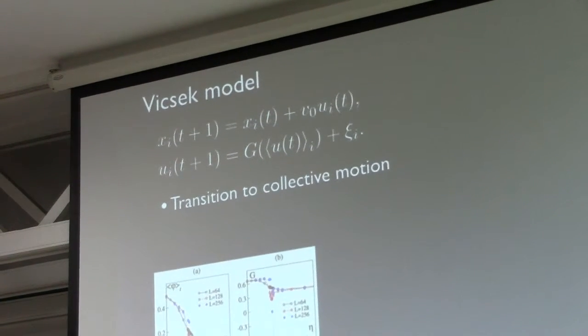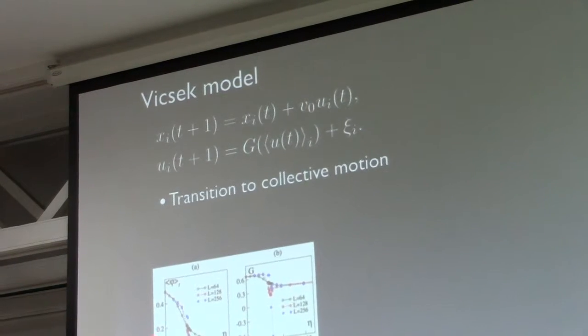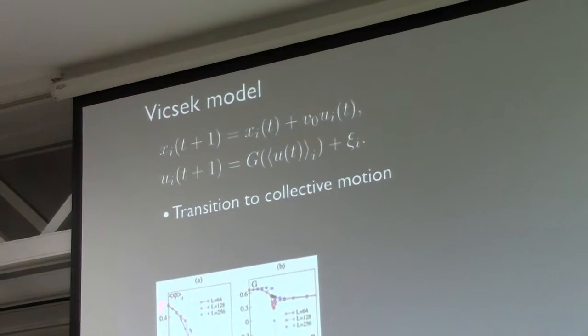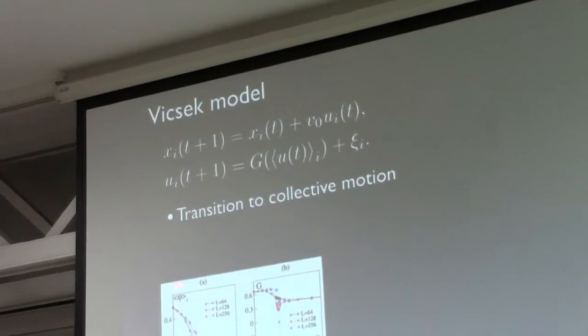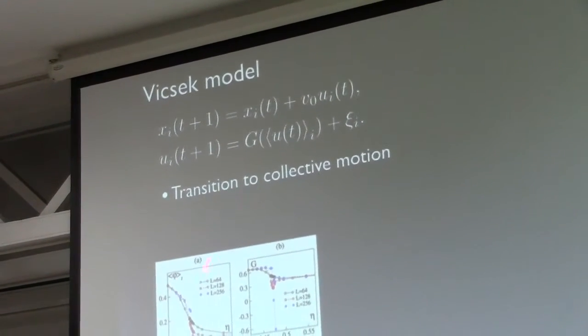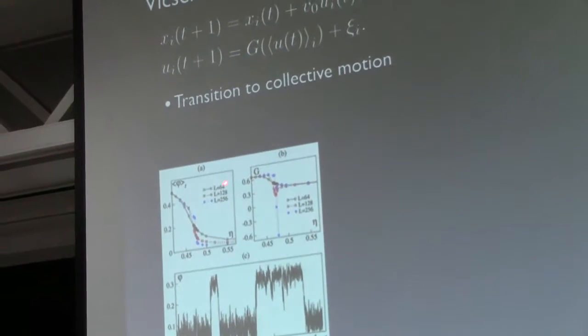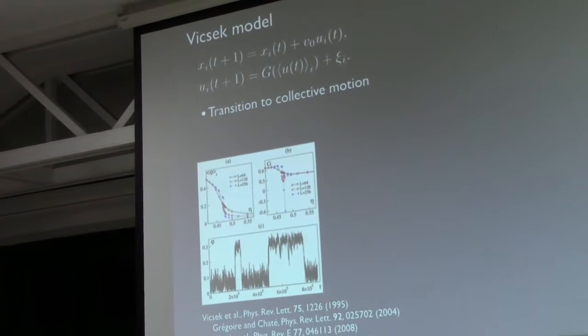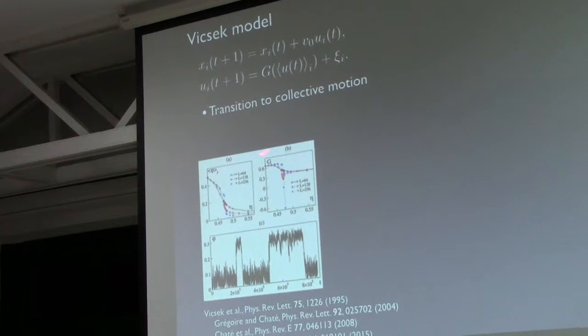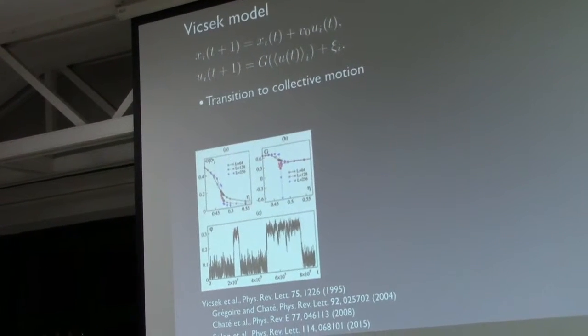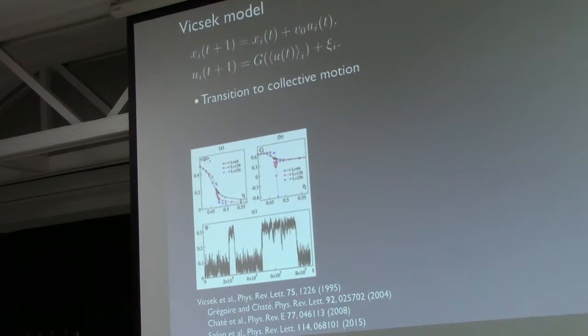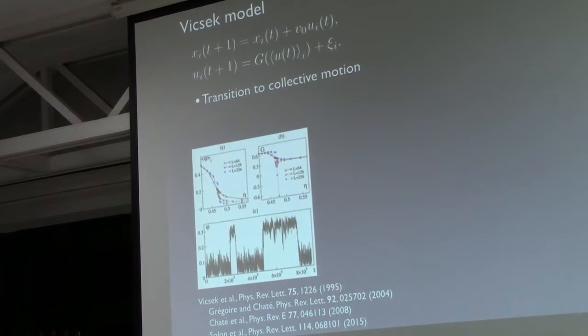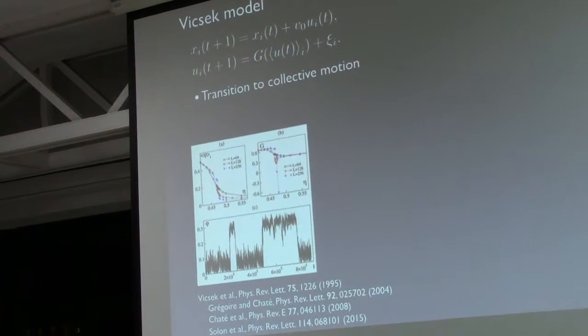What he saw is there is this transition to collective motion from an order state when the noise is absent. All particles start to move in the same direction. This is an order parameter proportional to the mean velocity of the group. As the amplitude of the noise increases, there's this transition from an order state to a disorder state. The system is out of equilibrium, so the Wagner-Mermin-Hohenberg theorem doesn't apply here.